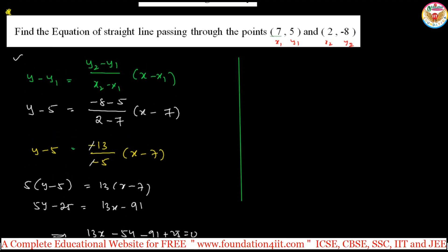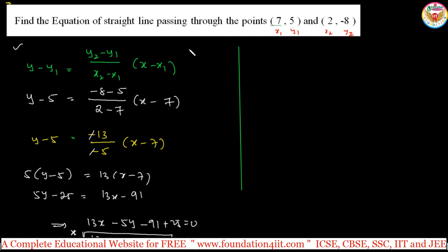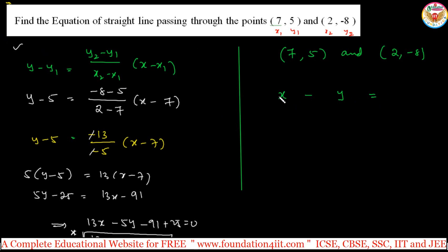Now, using the same question in Vedic Maths, how to simplify - just by seeing the question, without lengthy calculation, because in competitive exams you need quick techniques. Take the points (7, 5) and (2, -8). For the LHS, the x coefficient is the difference of the y coordinates: 5 minus (-8) equals 5 plus 8 equals 13. The y coefficient is the difference of the x coordinates: 7 minus 2 equals 5. So the LHS is 13x minus 5y.